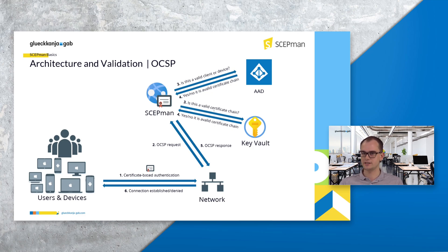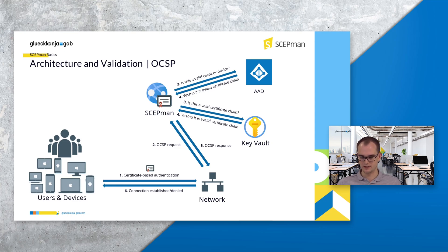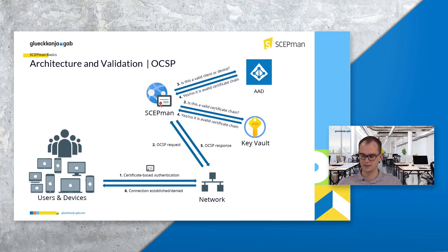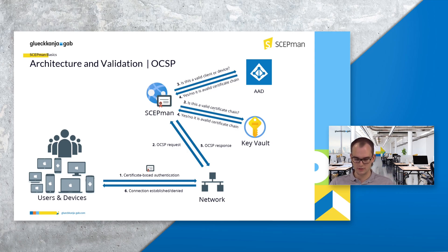A device wants to authenticate via a device certificate. This certificate from SCAPMAN is presented to the network — normally to an access point and then to a RADIUS server. The RADIUS server checks if the certificate is from a valid root certificate and then triggers an OCSP request towards SCAPMAN. SCAPMAN will then check if the device is valid by querying the Key Vault and Azure AD.